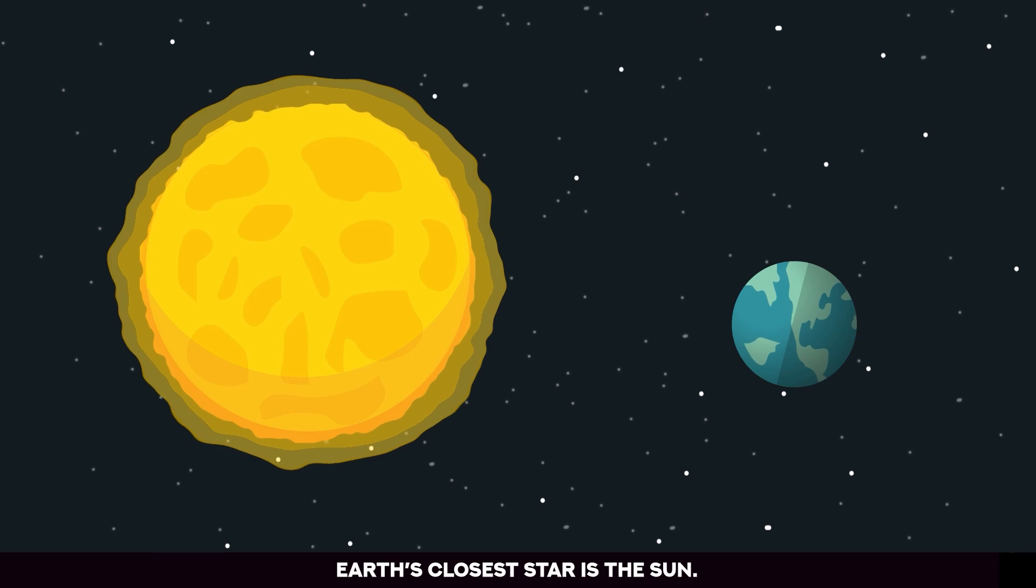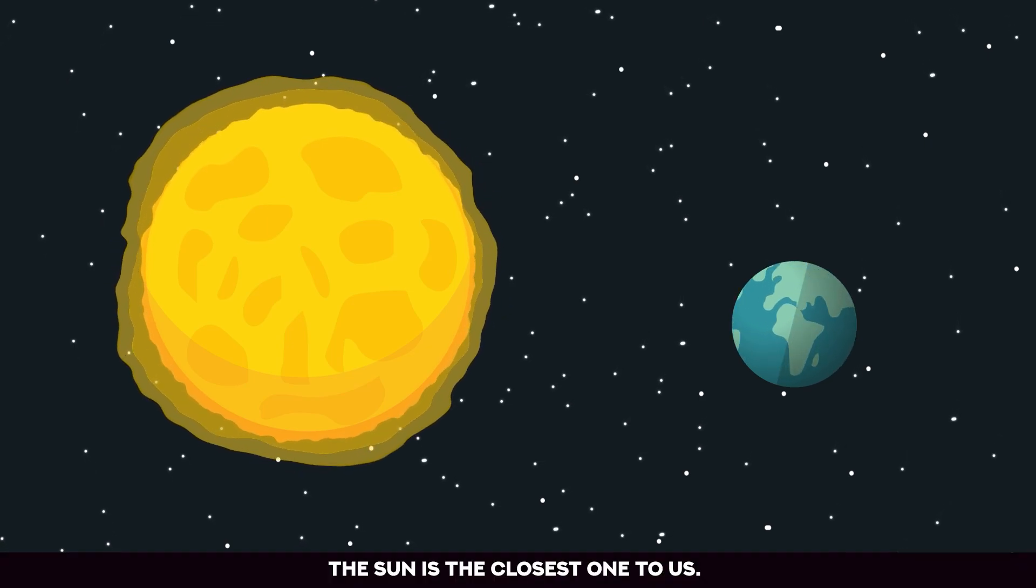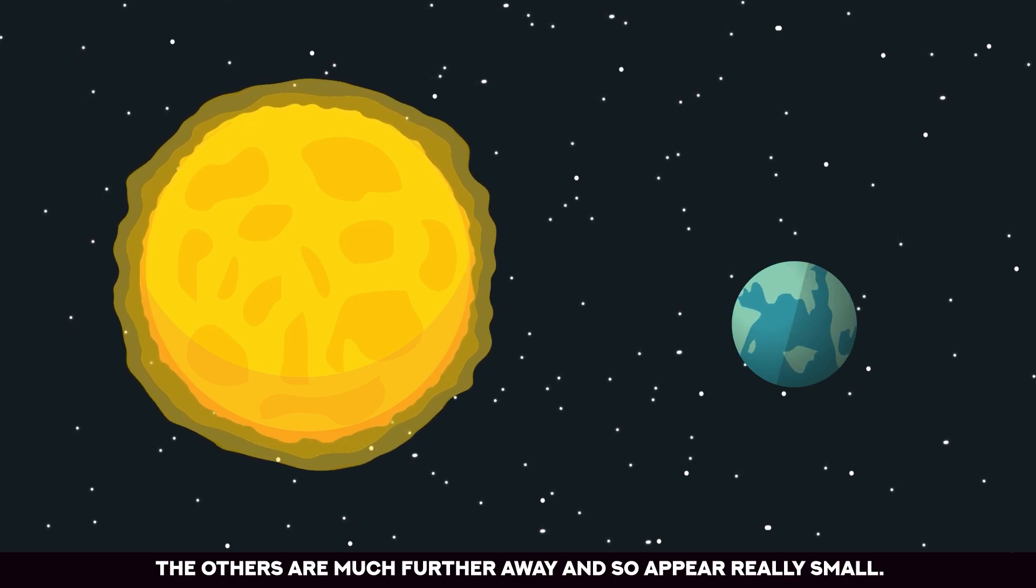Earth's closest star is the Sun. Whilst there are billions of other stars in our solar system, the Sun is the closest one to us. The others are much further away and so appear really small.